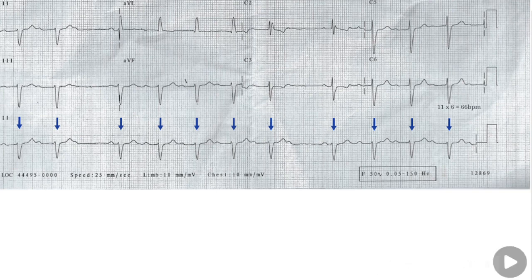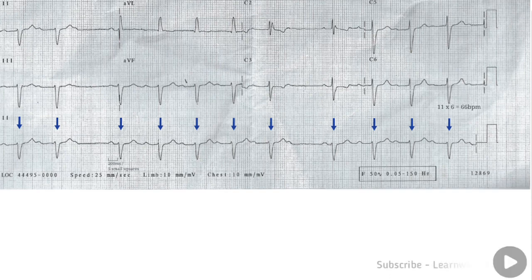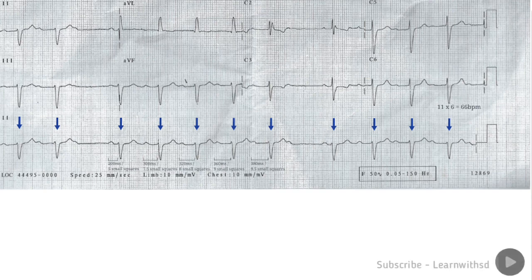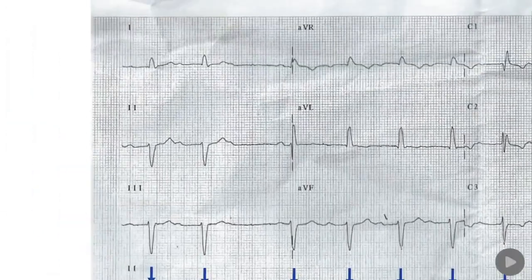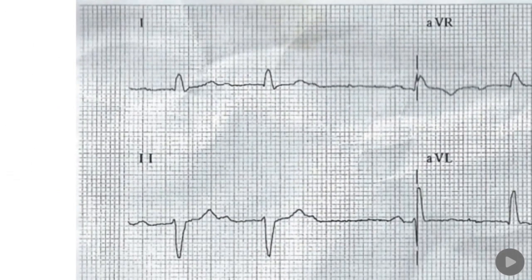With each conducted beat the PR interval is prolonged. Eventually the next P wave is not conducted, then there is a pause, and then this same pattern repeats. This is the classic Wenckebach pattern.